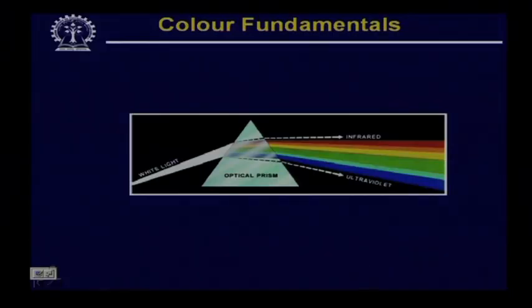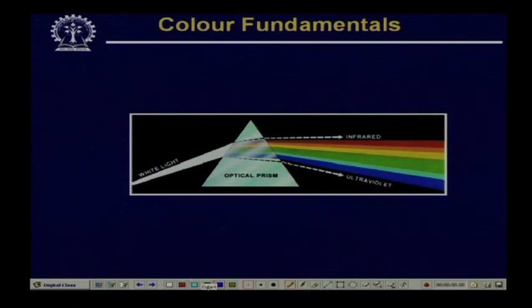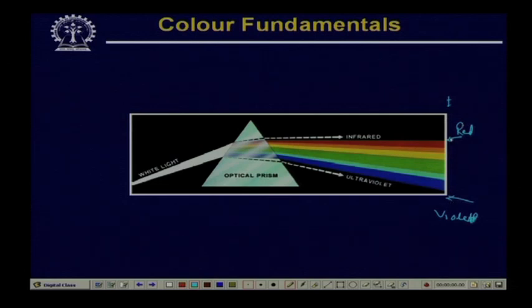As shown in this diagram, at one end of the spectrum we have violet and at the other end we have red. The colour components vary from violet to red, and this was discovered by Newton way back in 1666.